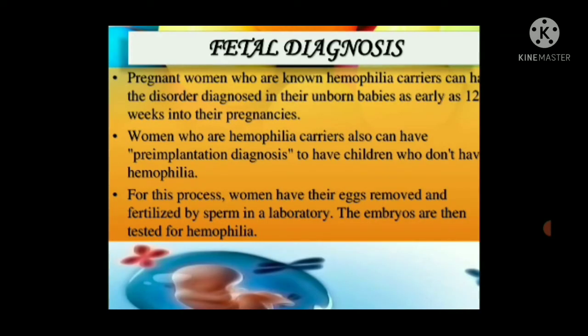Fetal diagnosis: Pregnant women who are known hemophilia carriers can have the disorder diagnosed in their unborn babies as early as several weeks into the pregnancy. Women who are hemophilia carriers can also have pre-implantation diagnosis: eggs are removed and fertilized by sperm in a laboratory, and the resulting embryos are then tested for hemophilia.